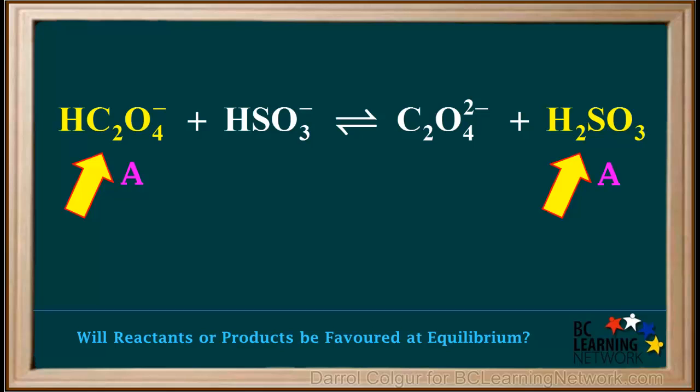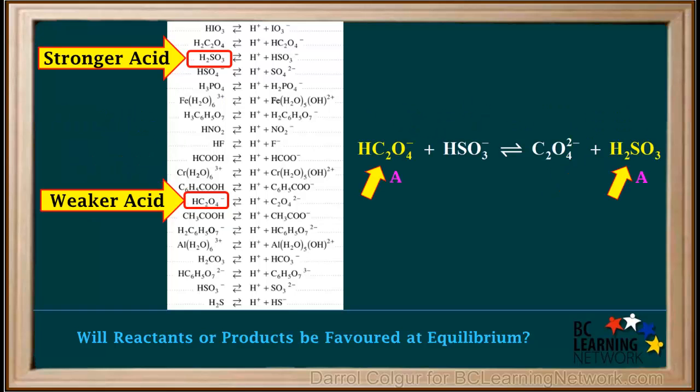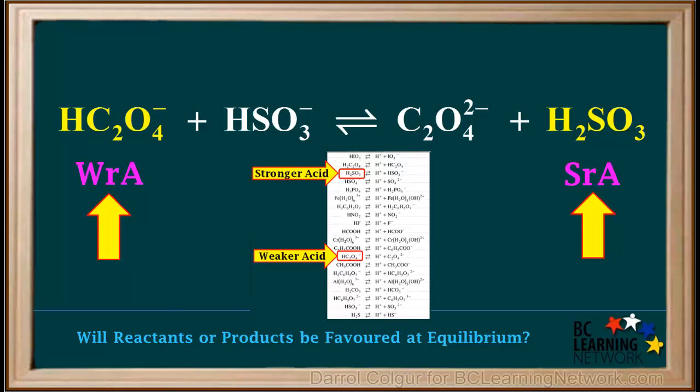Now we focus on the two conjugate acids in this equilibrium, HC₂O₄⁻ on the left and H₂SO₃ on the right. We look them both up on the left side of the acid table to see which one is stronger. We can see that of these two acids, H₂SO₃ is the stronger acid and HC₂O₄⁻ is the weaker acid. So we can label H₂SO₃ as the stronger acid and HC₂O₄⁻ as the weaker acid in our equilibrium equation.